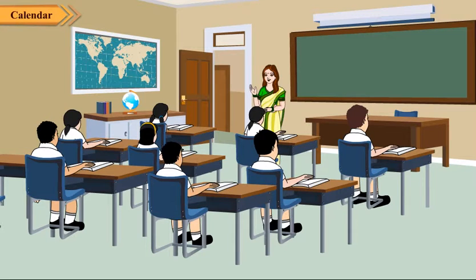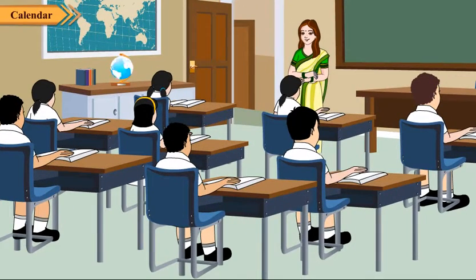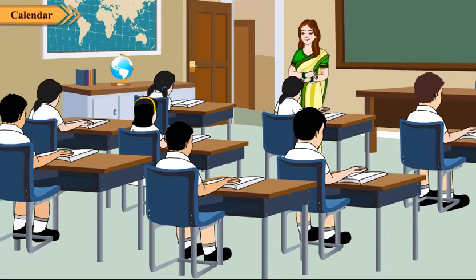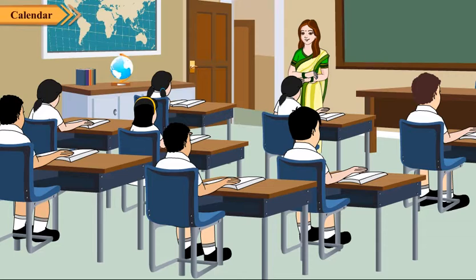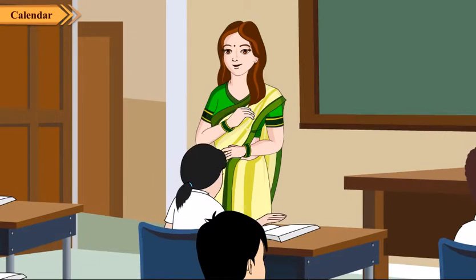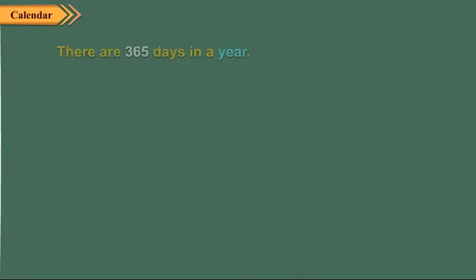Children, do you know how many days are there in a year? Yes, teacher, there are 365 days in a year. Good, and it is called an ordinary year. So there are 365 days in an ordinary year.